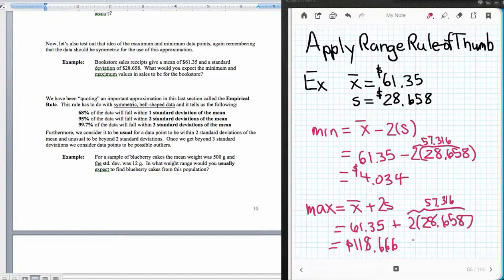And that would be what the value I would expect for my maximum. So the low end, 4.034. High end, 118.666. Now, on these values,